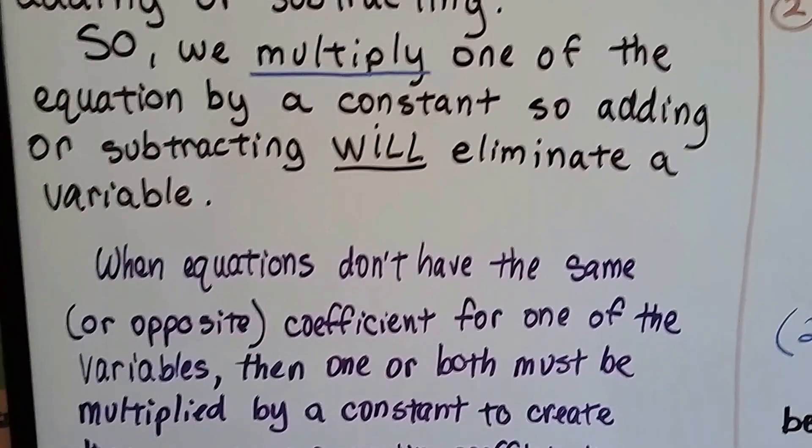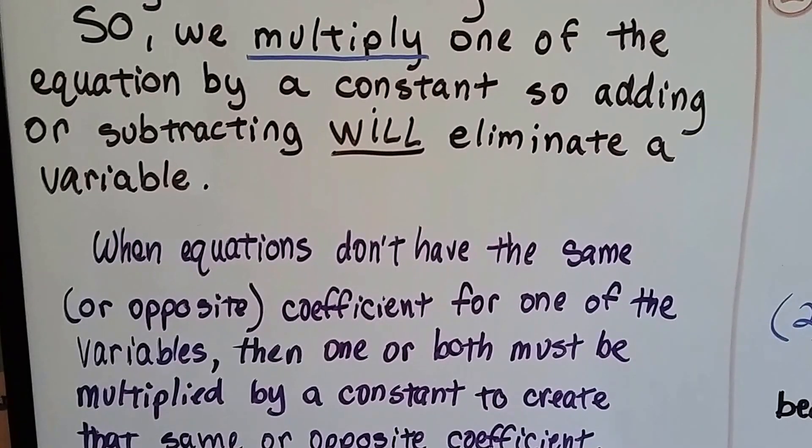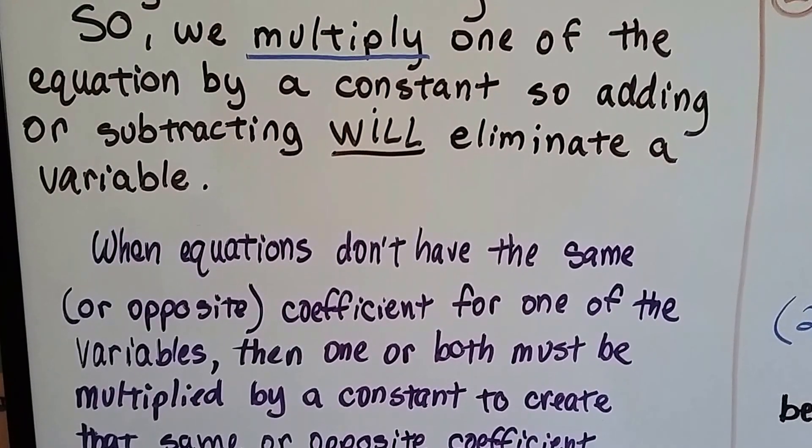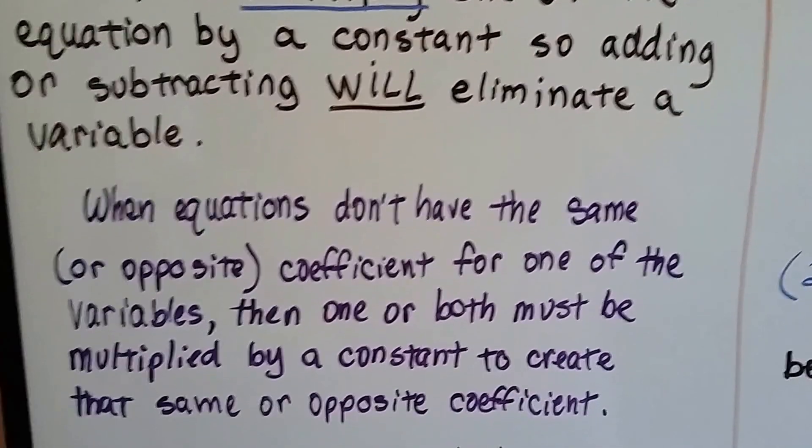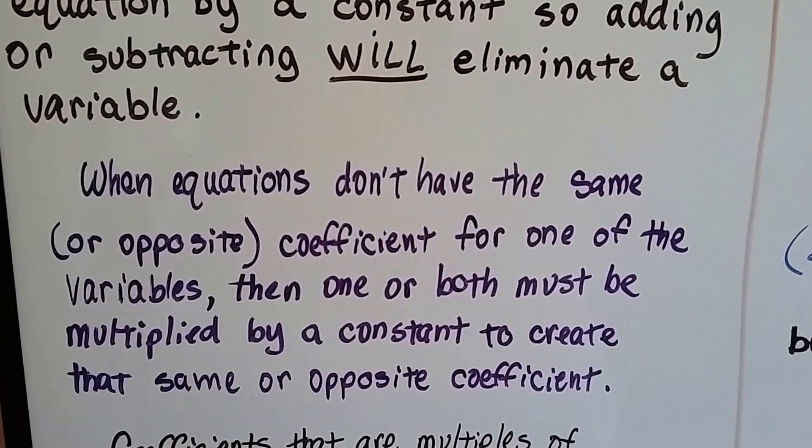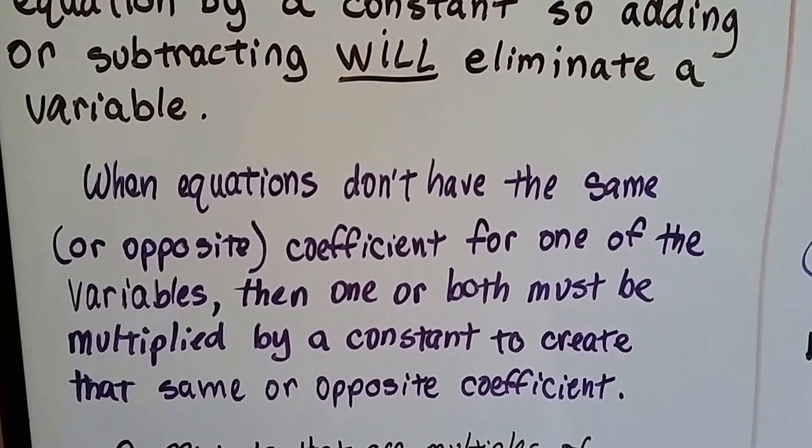When equations don't have the same or opposite coefficient, so we can't make a zero pair for one of the variables, then one or both must be multiplied by a constant to create that same or opposite coefficient.